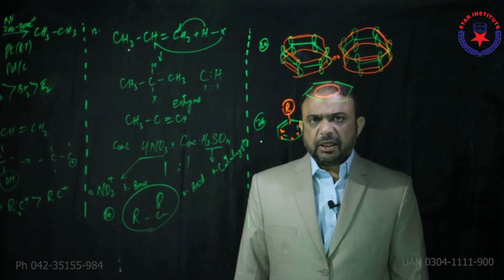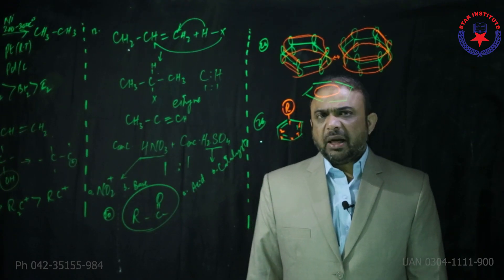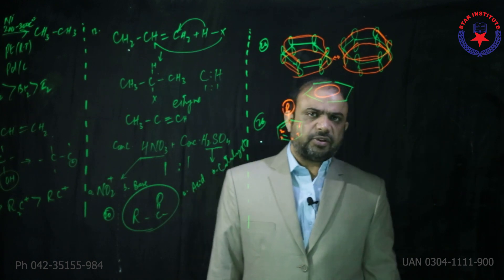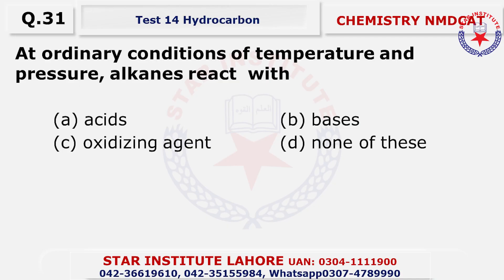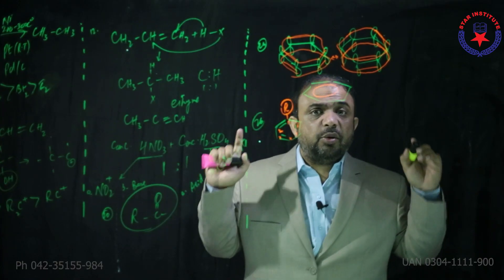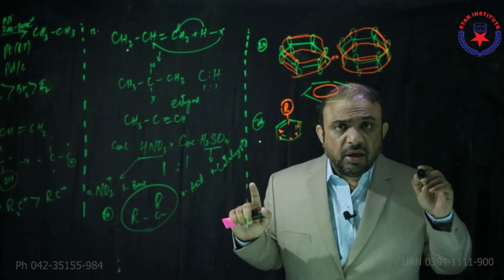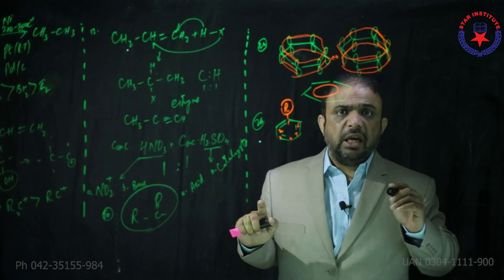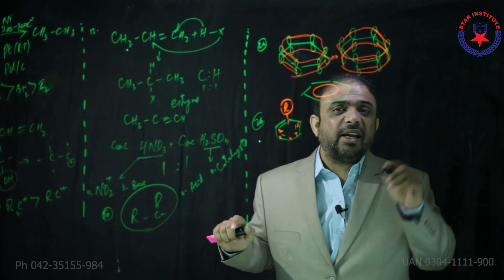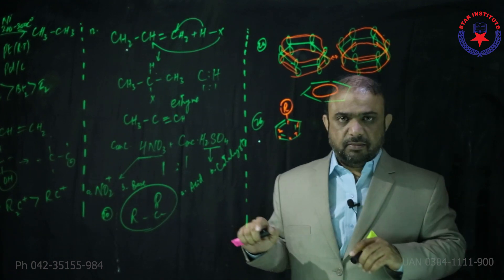For benzene: open chain structures were three, closed chain structures were four, and the total number of structures were seven. Question on conditions of temperature and pressure: alkanes react with none of these under normal conditions. Alkanes are highly stable and don't react very easily — they react only through a free radical mechanism.